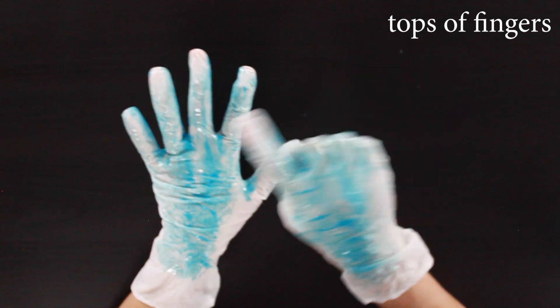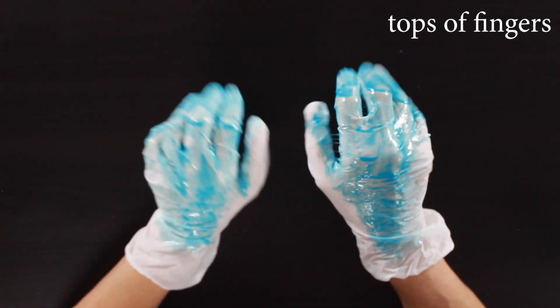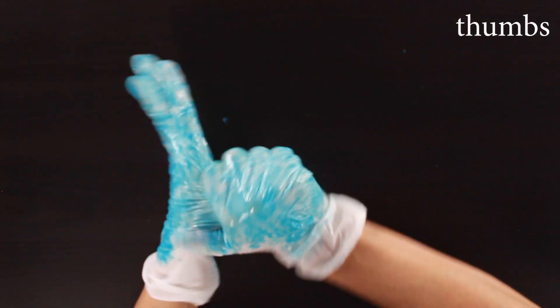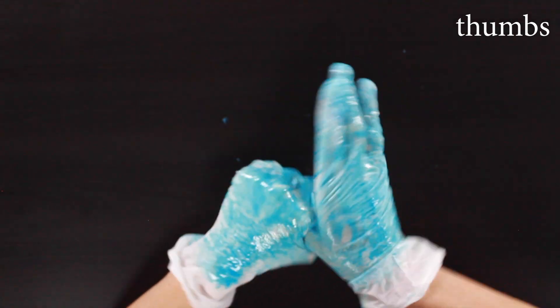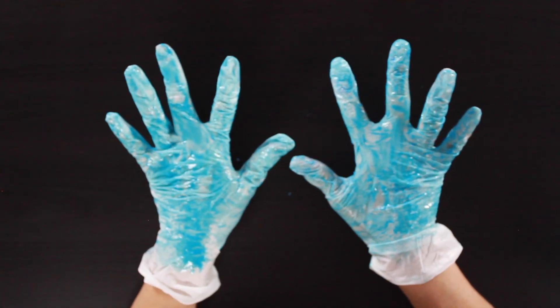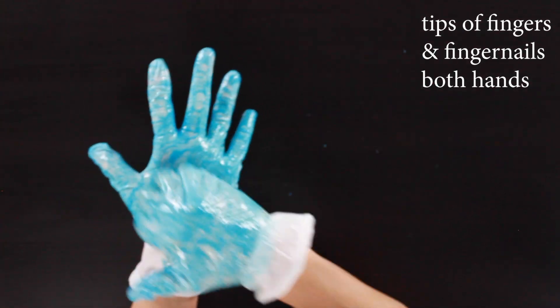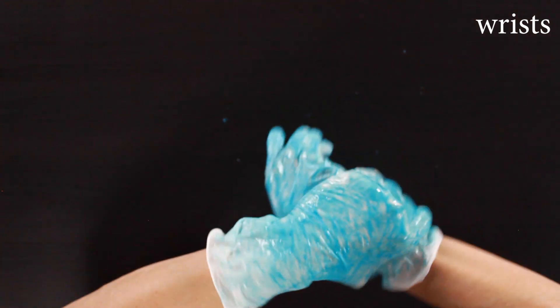Now we're going to focus on the tops of our fingers. Don't forget your thumbs. Then we're going to focus on the tips of our fingers and our fingernails on the left and on the right. Last step is to rub our wrists on the left and on the right.